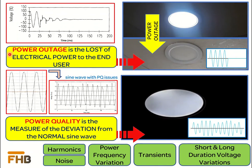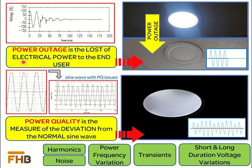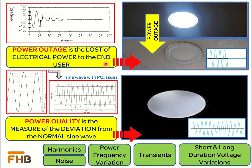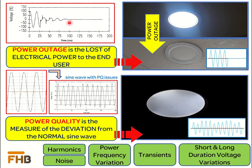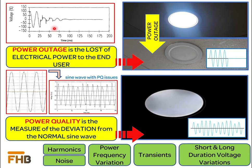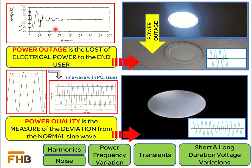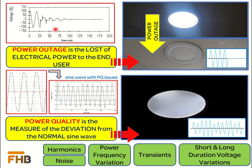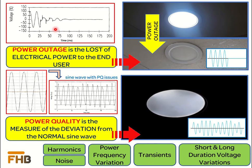A power outage or power failure is simply the loss of electrical supply to the end users. There can be several reasons for power outage in the electrical network, such as any kind of fault in the power generating stations or in the power transmission and distribution system, or any damage to the power transmission and distribution lines due to different reasons, or malfunctioning of the protection equipment, or mal-operation of the circuit breakers.